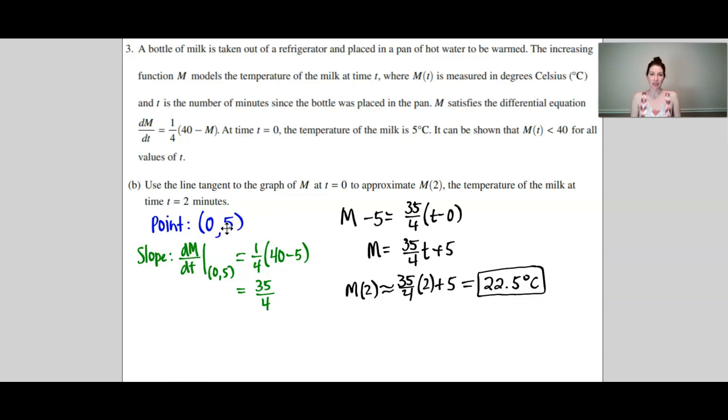To find the slope at this point, we need to take the slope that was given to us, the dM/dt, and plug in 0 if we see a t and 5 if we see an M. So once I do that I get a slope of 35 over 4.